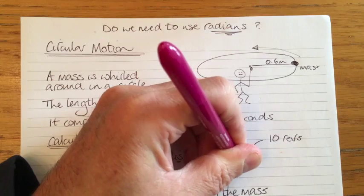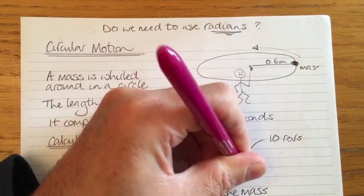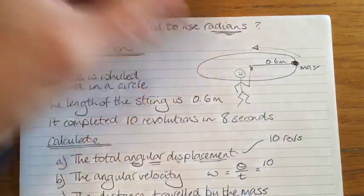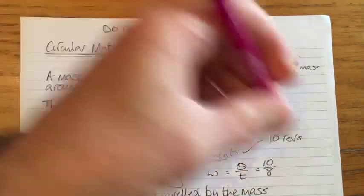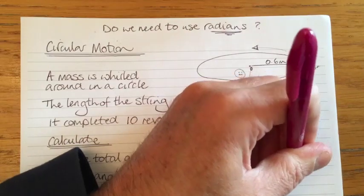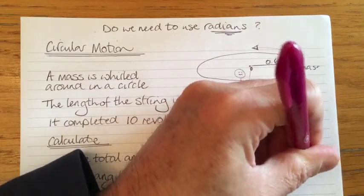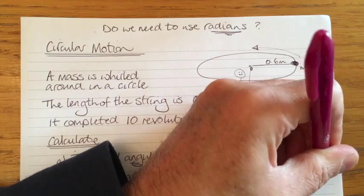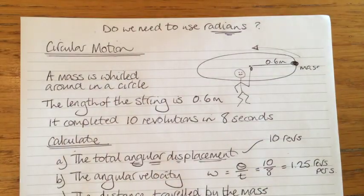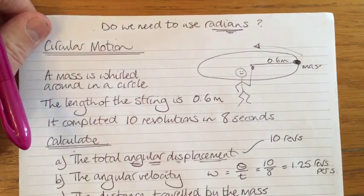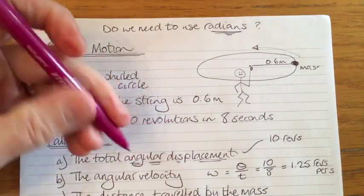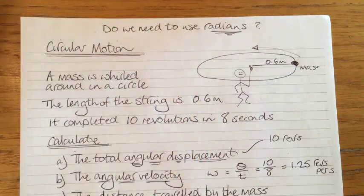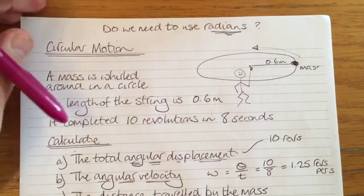The symbol we use for angle is theta. It's doing 10 revs, and it's doing that in 8 seconds. So your angular velocity could be 1.25 revs per second. It's doing 1.25 revs per second — that is an acceptable way of writing what the angular velocity is.